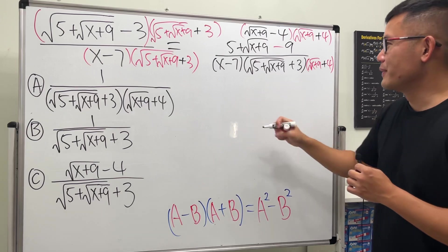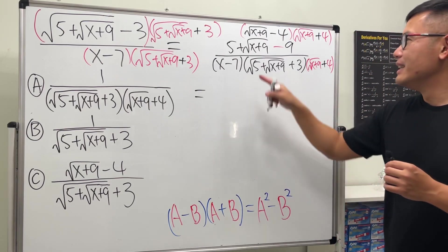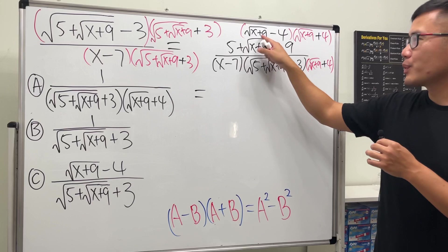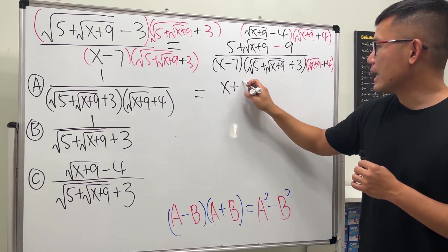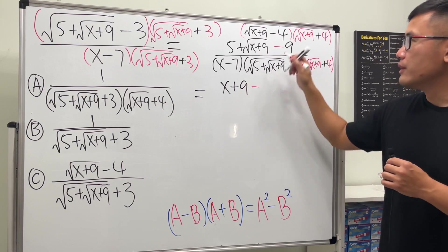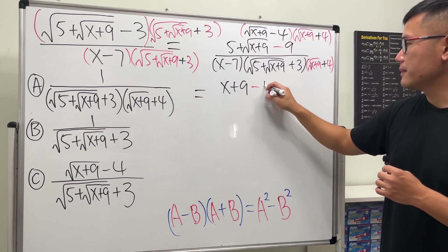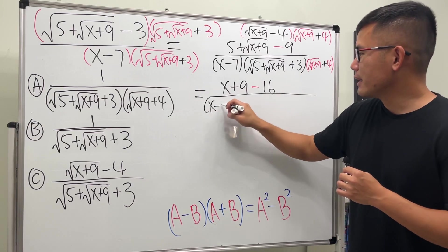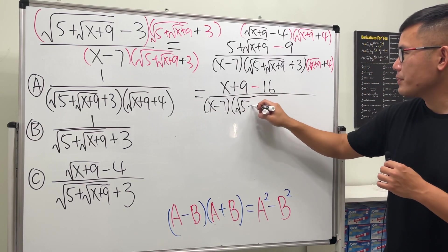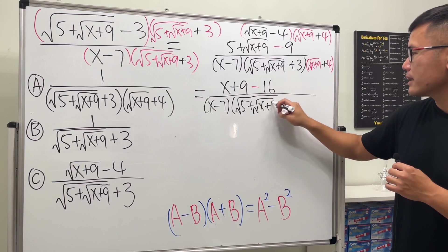So on the top again we use that formula. So square this, and the square root squared cancel, so x+9, and then minus 4² is 16. And then over all this thing, right? So we have (x-7) times (√5 + √(x+9) + 3).